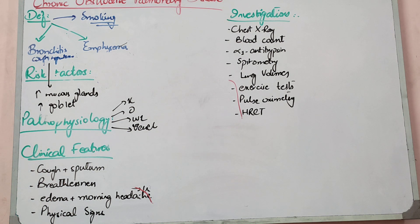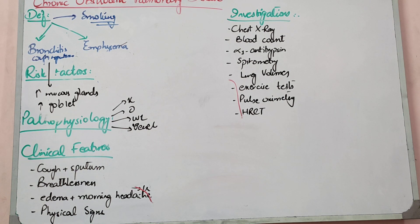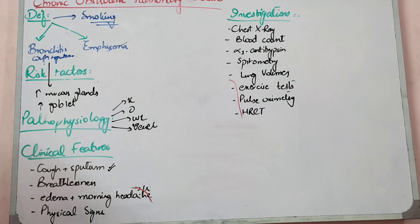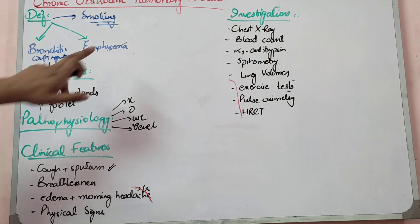The first scenario is that a smoker is presented to you. The first clinical feature is chronic cough with sputum production. In asthma you get a dry cough, but in COPD there is sputum production because of mucus gland hyper-reactivity.